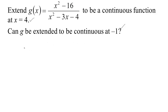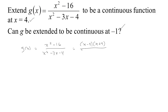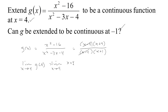Let's see if we can make it be continuous at four. Our function really simplifies a little bit here. We have x squared minus sixteen over x squared minus three x minus four, but that factors to x minus four times x plus one. So if we wanted to find the limit as x tends to four of g of x, those can cancel and we have x plus four over x plus one, so we get eight over five.